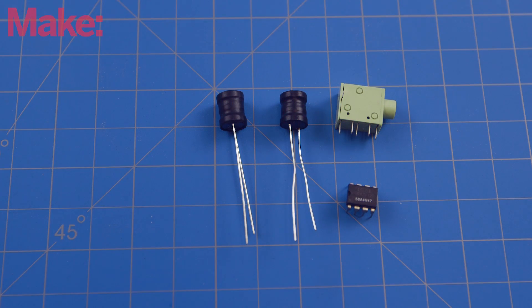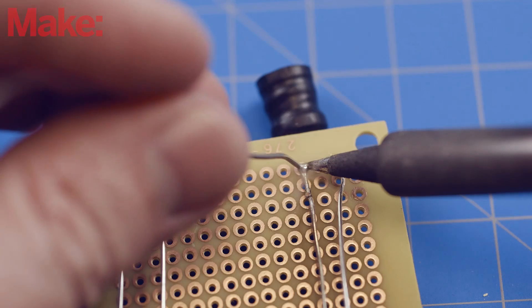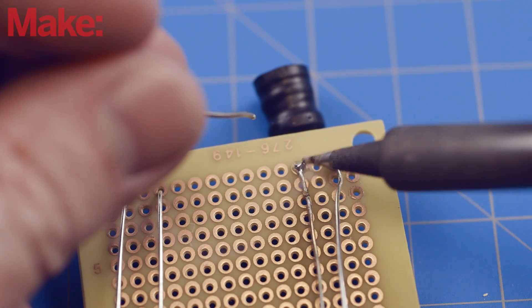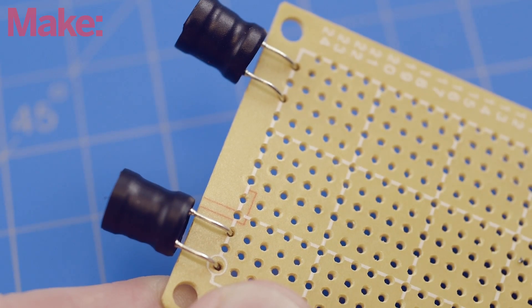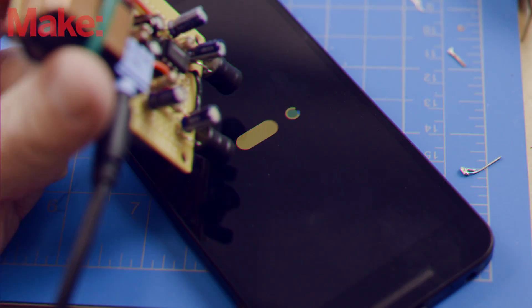You can easily get these from any online electronics supplier. Start by soldering the inductors to the top row of the perfboard. Make sure that there's some distance between them. These are essentially our microphones, and you'll get a better stereo effect if you give them some room.